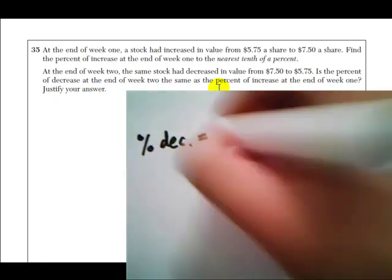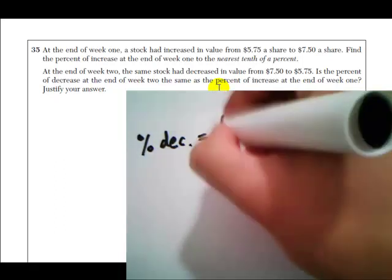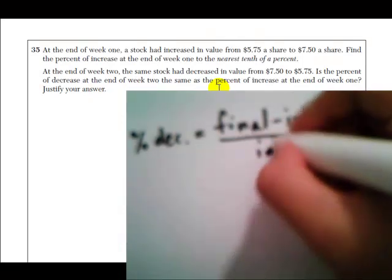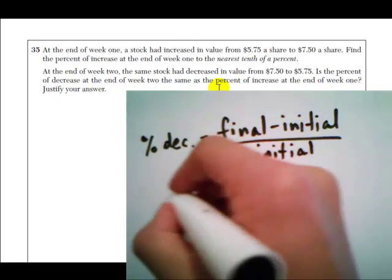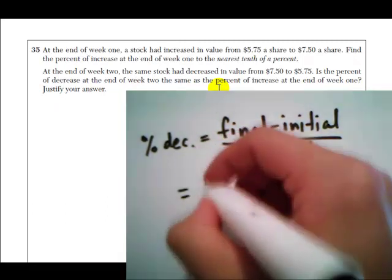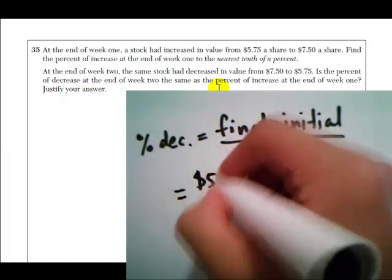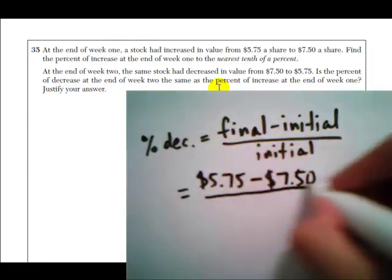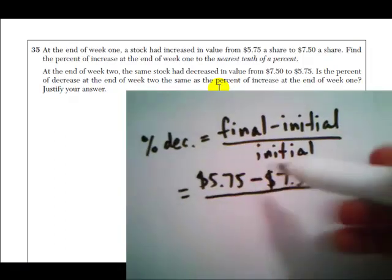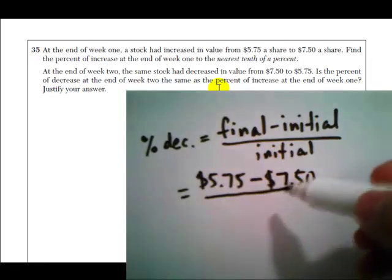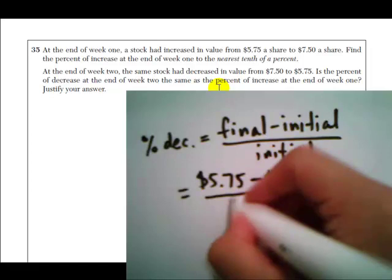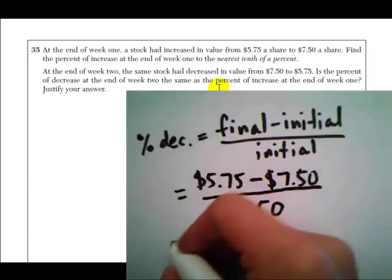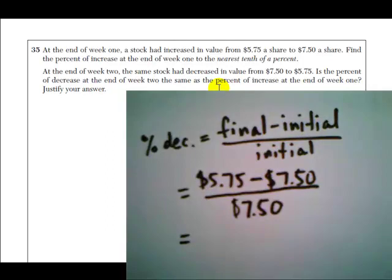It's the same kind of calculation. Decrease is going to be negative. It's still final minus initial over initial. So this time, the final price is $5.75, and it started out week two at $7.50. Now here's the difference between this and the first calculation we made. The first calculation we divided by $5.75 because that's where it started. Week two, though, it starts at a price of $7.50, so we want to look at the change relative to $7.50.